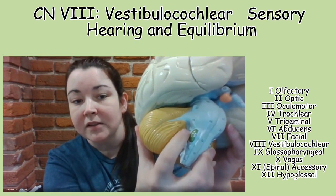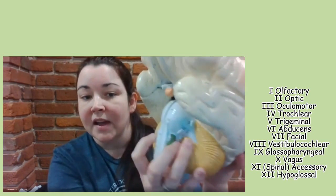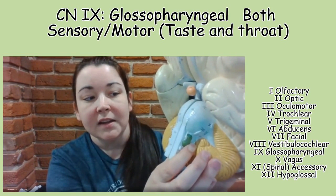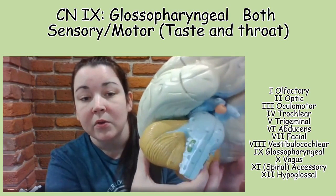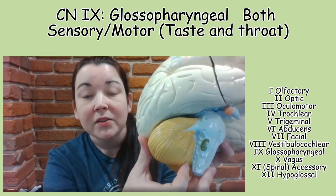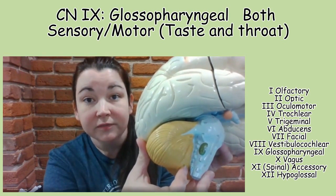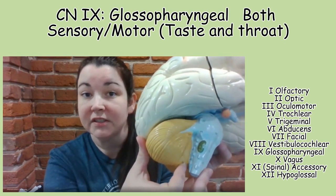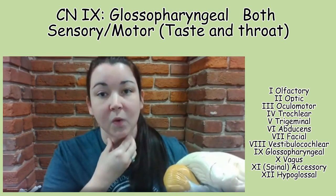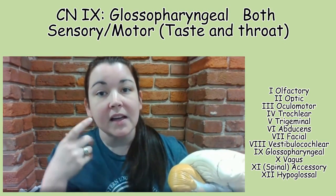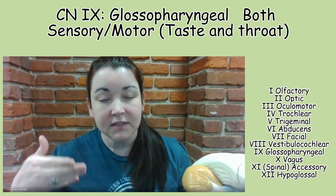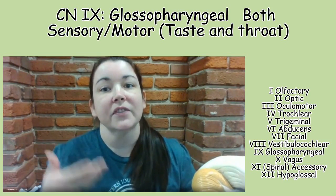Cranial nerve nine is glossopharyngeal, identified as number 121 next to the olive. 'Glosso' tells me tongue, and 'pharyngeal' tells me pharynx, so it makes sense that this nerve allows for swallowing. It also allows for taste in the posterior one-third of your tongue. To compare: facial allows for taste on the anterior two-thirds, while glossopharyngeal covers the posterior one-third.